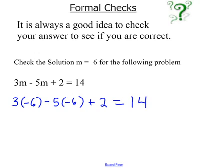Now all I'm going to do is I'm going to just solve this following the rules of BEDMAS. So 3 times negative 6 is negative 18. Negative 5 times negative 6 is 30. Then I'm just going to add my 2. And all along, I'm hoping that this is equal to 14.